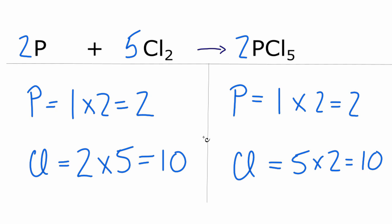The key is we saw we had this odd number for chlorine and an even number on the reactant side, and we multiplied that by two to get ten, which made the rest of the equation fall into place. This is Dr. B with a balanced equation for P plus Cl2 yields PCl5. Thanks for watching.